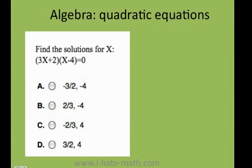In this question, they ask me to find the solutions for x, and they give me 3x plus 2 times x minus 4 equals 0. Here I can see I'm going to have two answers because this is actually a quadratic equation.